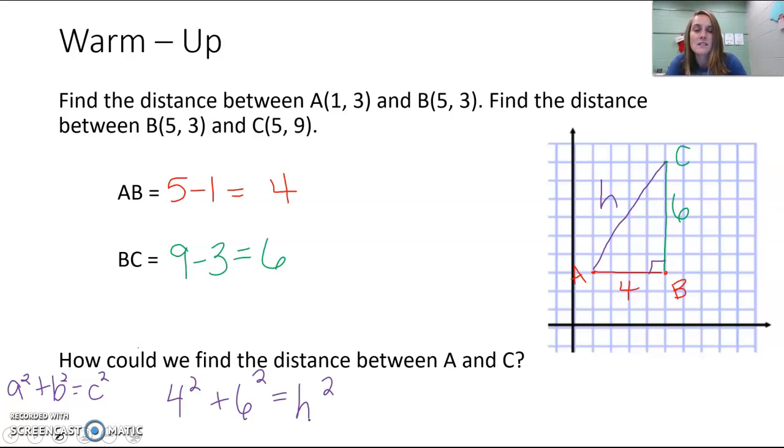4 squared is 16. 6 squared is 36 equals h squared. 16 plus 36 would be 52, equals h squared. And then when we were solving with Pythagorean theorem, once we have our squared variable equals our number, we took the square root, right? So h is equal to the square root of 52.